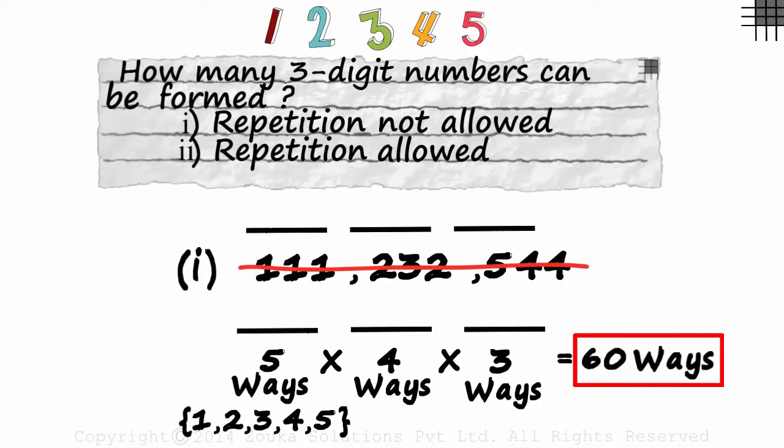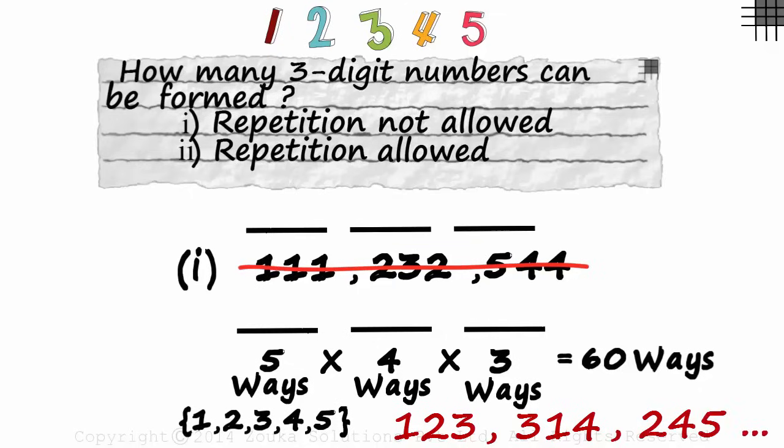These include numbers like one-two-three, three-one-four, two-four-five and so on. No repetition. Hope this was clear.